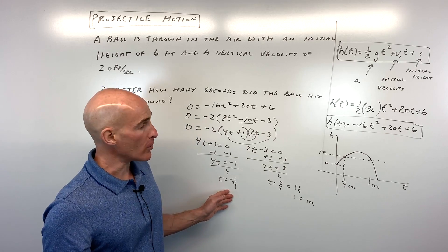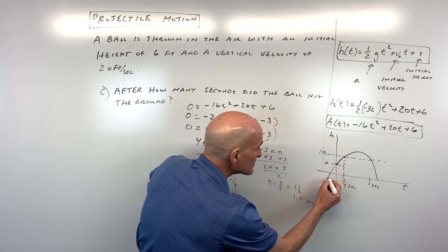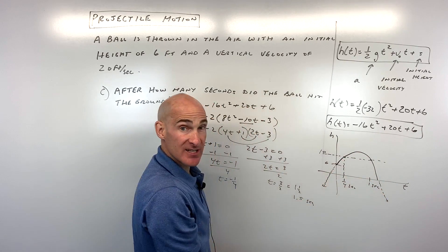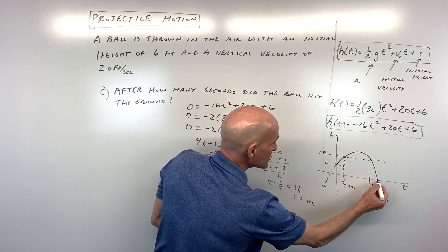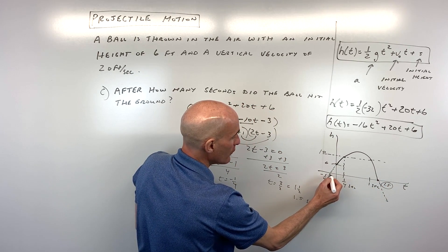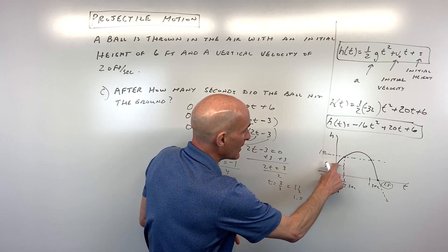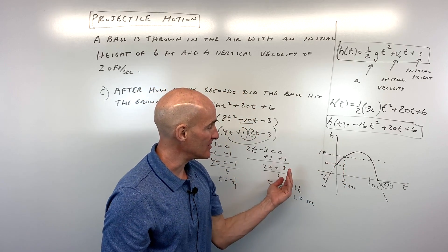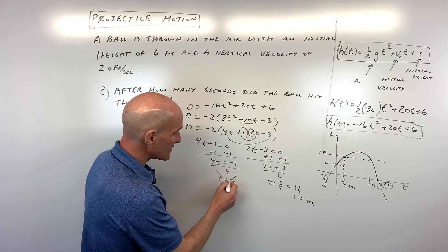Now, what about the negative one fourth? The parabola mathematically keeps going, but in our real-life problem the ball hits the ground and stops — it doesn't go through the ground. The crossing at one and a half seconds is the real answer. The negative one fourth corresponds to going backwards in time, which isn't physically meaningful. This is what we call an extraneous root — a false answer — so we cross that one out. The answer is one and a half seconds.